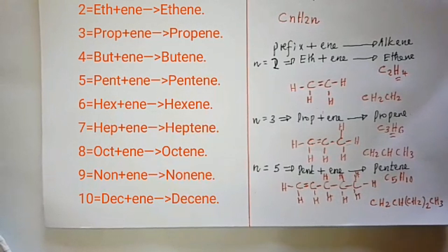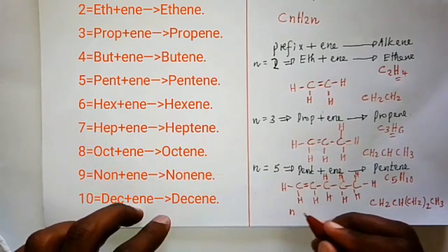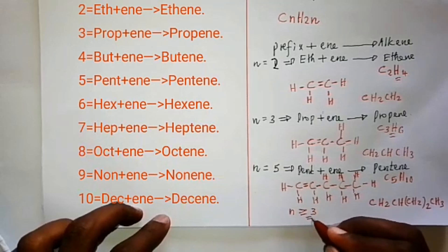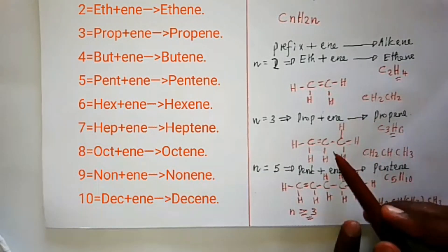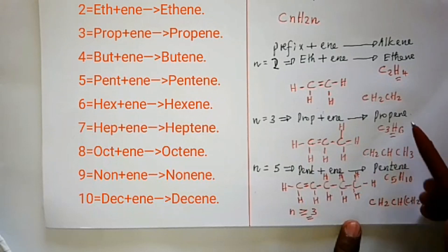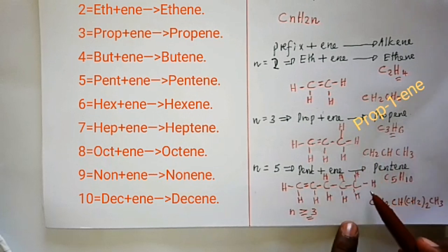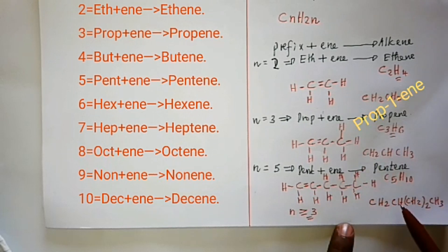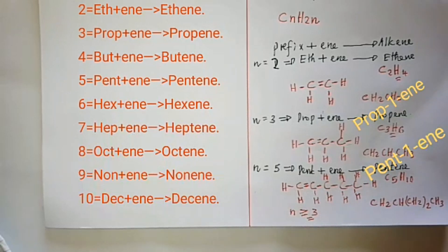Note: if the value of n is equal to or greater than three, the alkene should be named systematically. For propene, the systematic name is prop-1-ene, where the '1' indicates the position of the double bond. For pentene, the systematic name becomes pent-1-ene.